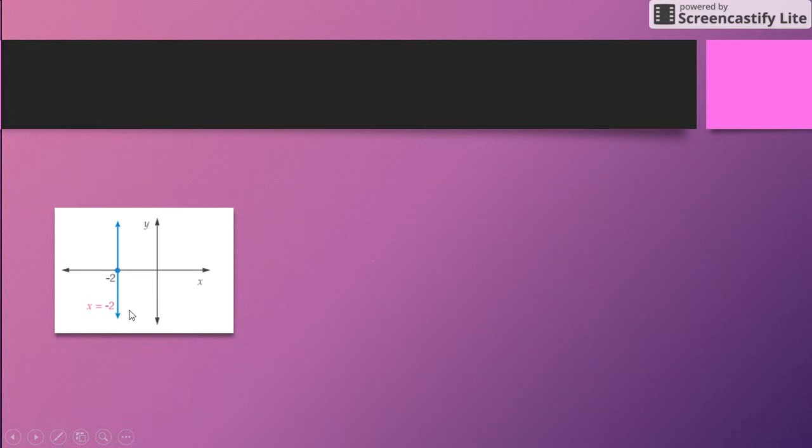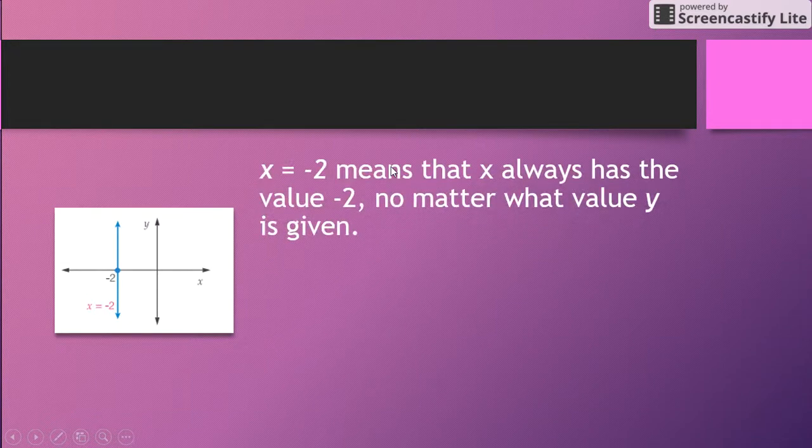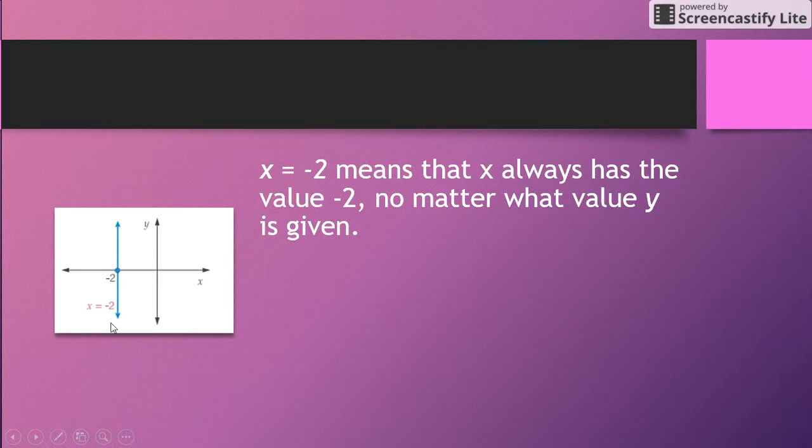If you look at this one, this is x equals negative 2. So x = -2 means that x always has the value -2, no matter what the value of y is.